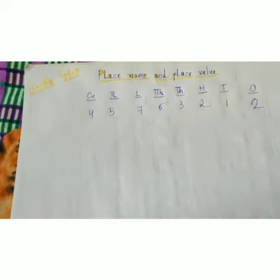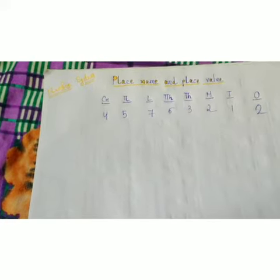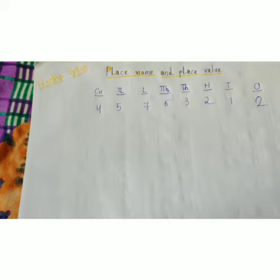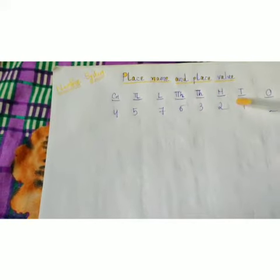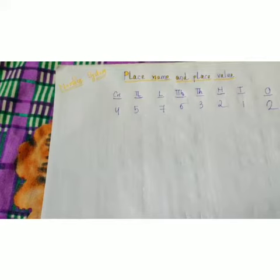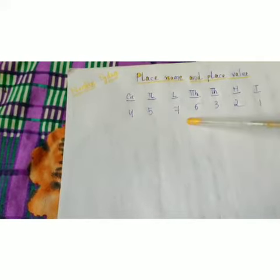So, if the question will come — two is placed in which place? Two is placed in the hundred place. Three is placed in which place? Thousand place. Seven is placed in which place? Lakh place.